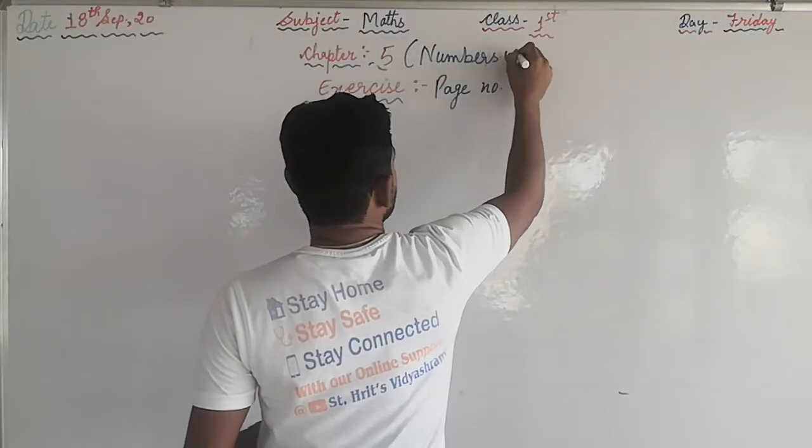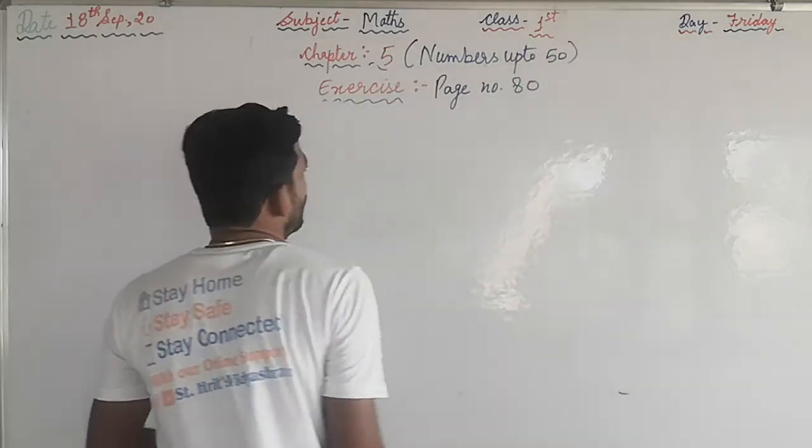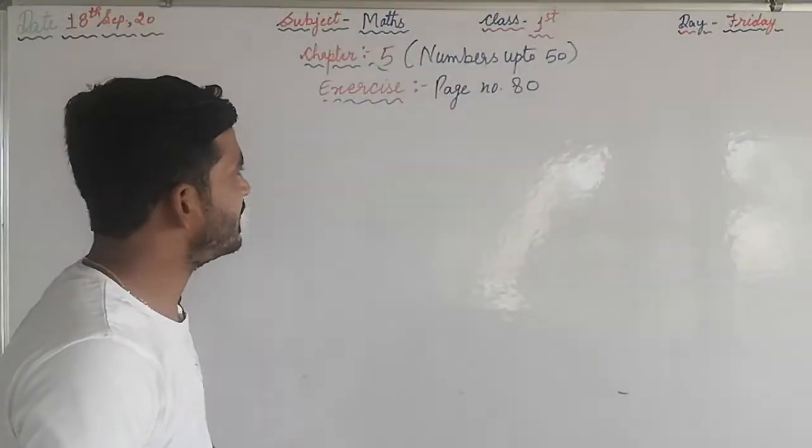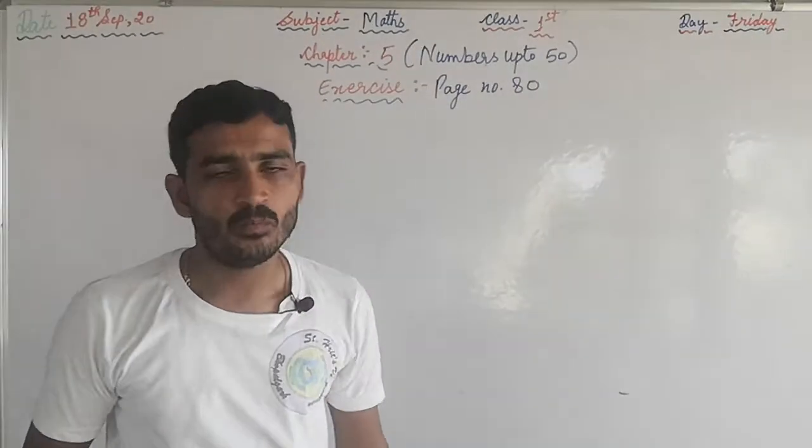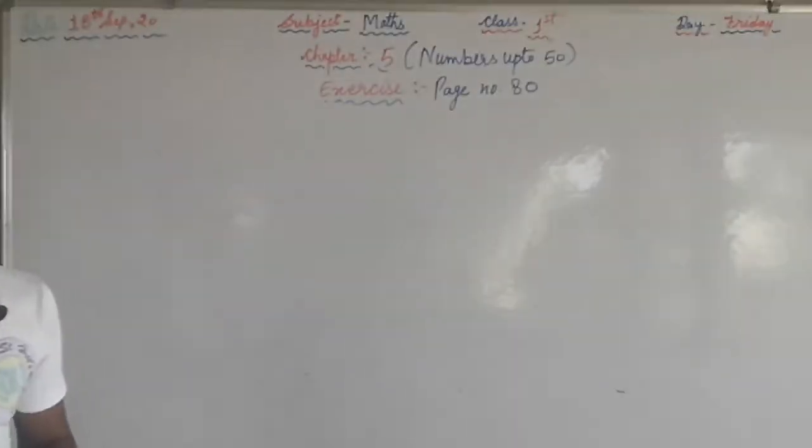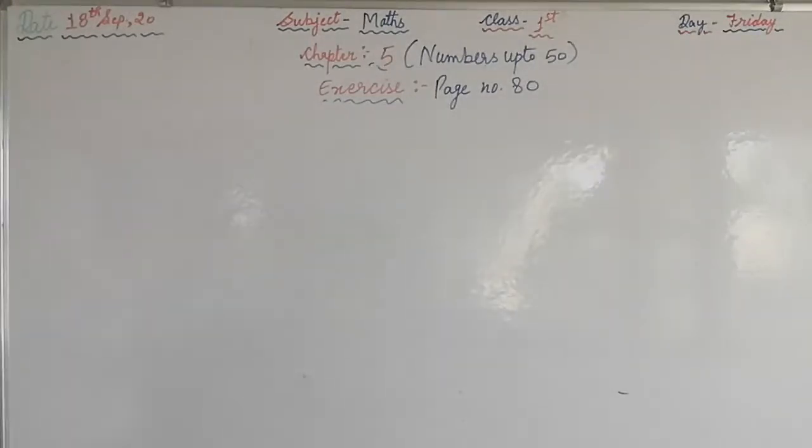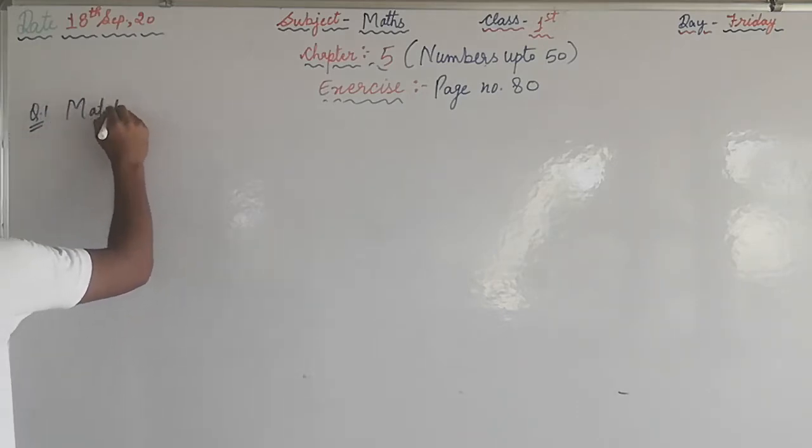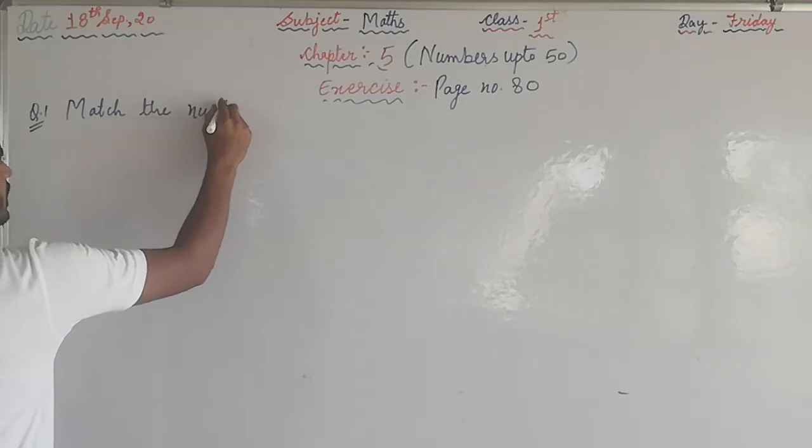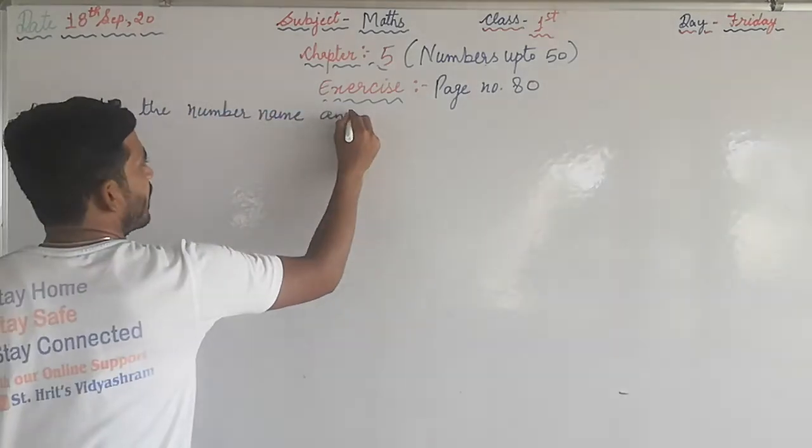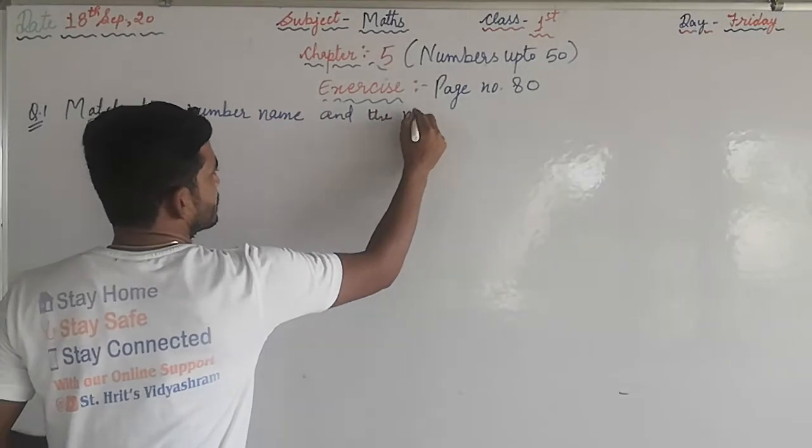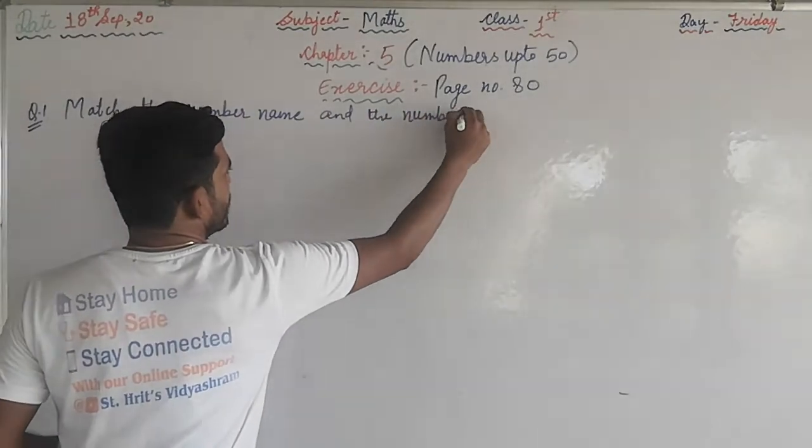Chapter number 5, Numbers up to 50. Now we are going to discuss the exercise that is on page number 80 in your book. So open page number 80. Question number first: match the number name and the numbers.